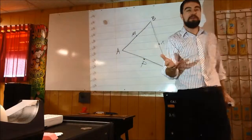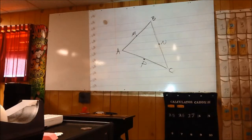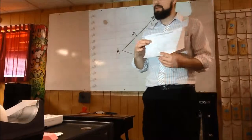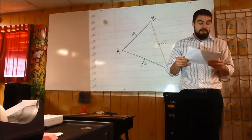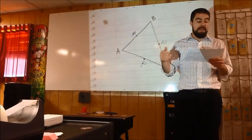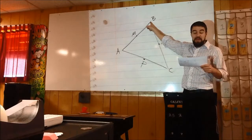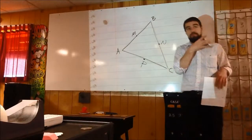Flip over that chart and let's read about our next and final special segment in a triangle — it's called the median. On your chart, medians are the very first one at the top. A median connects a vertex and goes to the opposite side's midpoint. That's why I had you locate the midpoints.